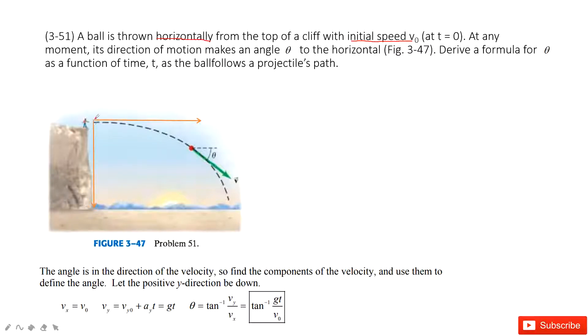So initially, we only have the initial velocity at x component. And then, we say at any moment, its direction of motion makes angle theta. So at any moment, there is angle theta to the horizontal.